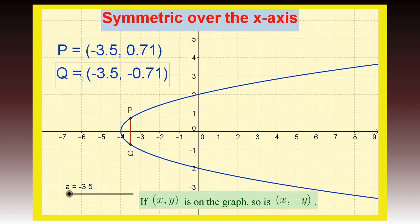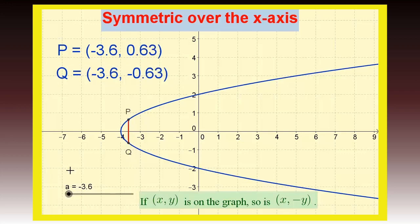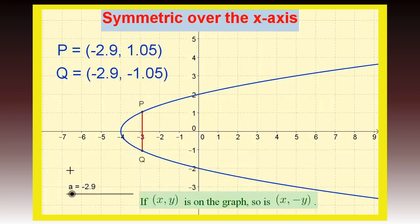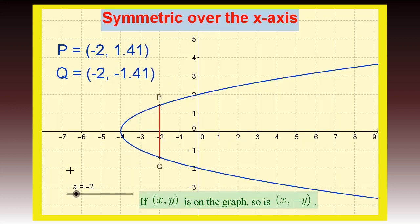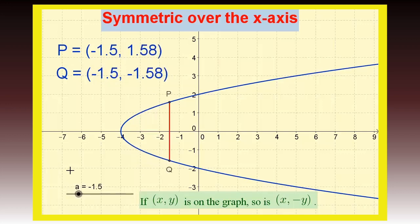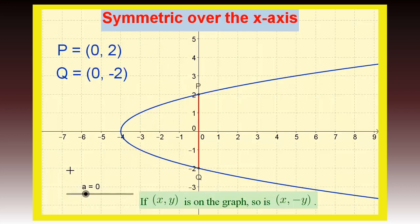Here we have a graph with points P and Q. These points line up vertically so that the x's are the same, but they have opposite y values. As we see the slider in motion, notice that the x's are always the same, but the y values are both positive and negative versions of the same number.